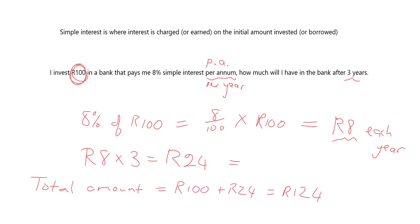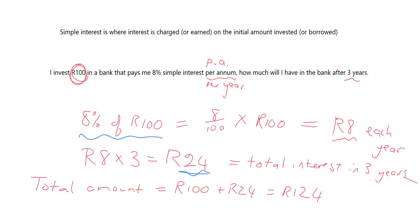So just to be clear, 24 rand is the total interest I would have earned in three years. To get to our answer we had to take 8% times 100 times 3. So we take the interest rate — I'll call that I — times the initial amount invested — I'll call that P.